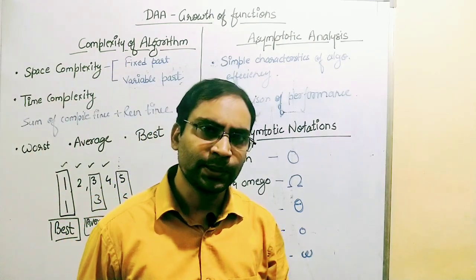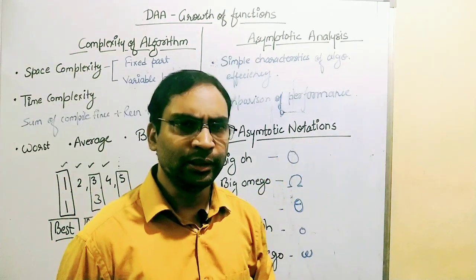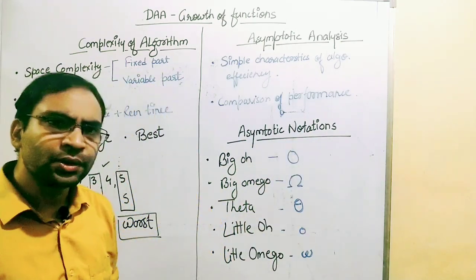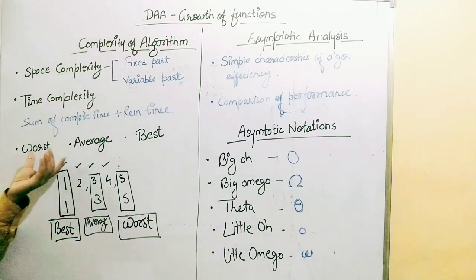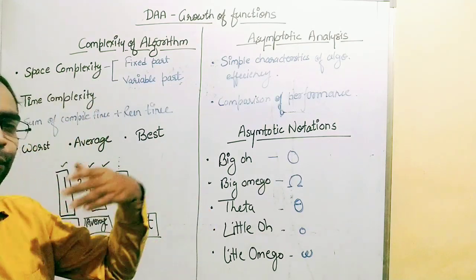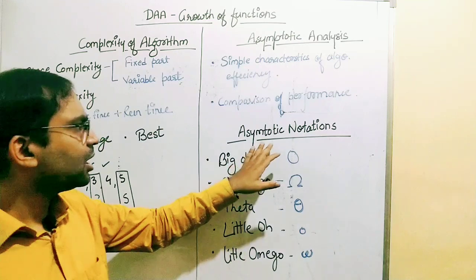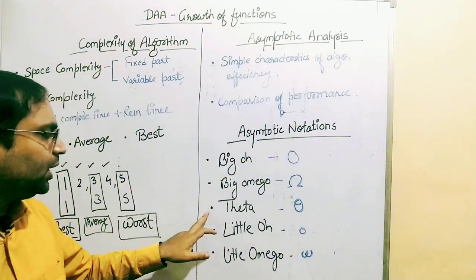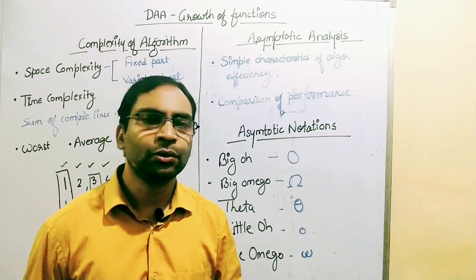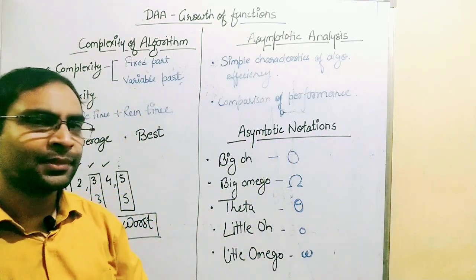To perform asymptotic analysis, we have some mathematical notations called asymptotic notations. We have five asymptotic notations: Big O, Big Omega, Theta, Little O, and Little Omega. These notations can also be related to worst, average, and best cases — we will discuss how they relate in the next lecture when we discuss these notations in detail. That's it for today's lecture. In the next lecture, we will discuss asymptotic notations in detail. Thank you so much.